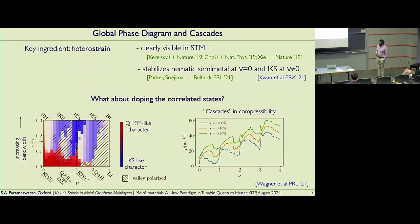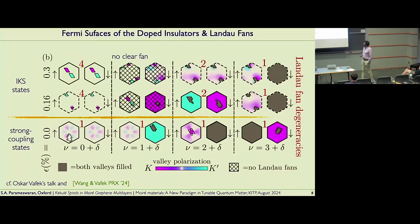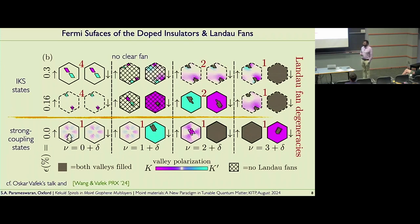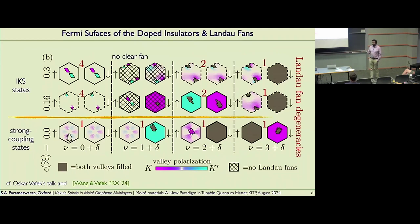You can also just compute a poor man's Landau fan: stay at B=0, dope the system, look at the number of equal-area Fermi surfaces you get, count them, and claim you'll get the right Landau fan structure by how they evolve. Oscar's very nice talk yesterday makes some of this redundant — at low fields this is actually consistent with his calculations. When you have strain in the sample and work at IKS, you get the correct Landau fans.